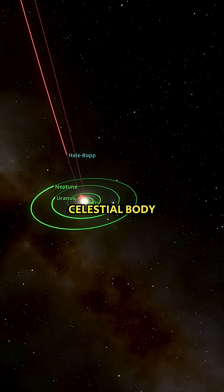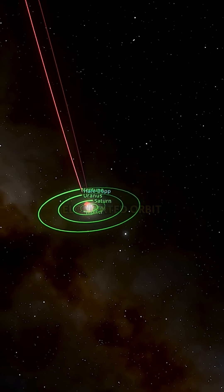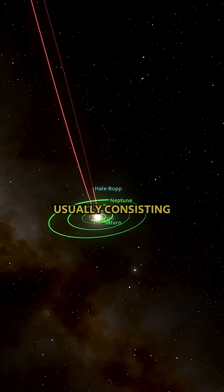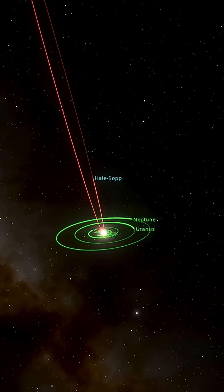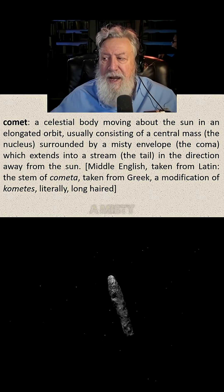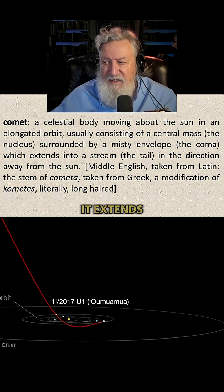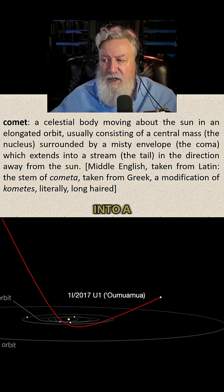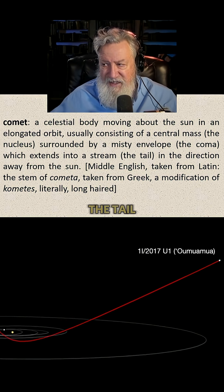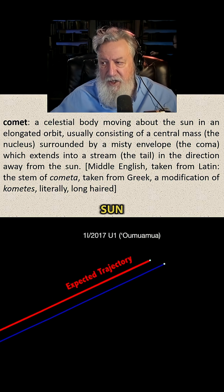A comet is a celestial body moving about the sun in an elongated orbit, usually consisting of a central mass — the nucleus — surrounded by a misty envelope, which is the coma. It extends into a stream, which is the tail, in the direction away from the sun.